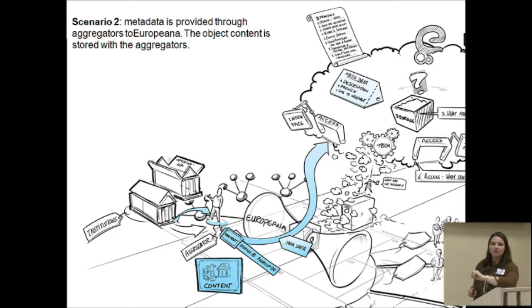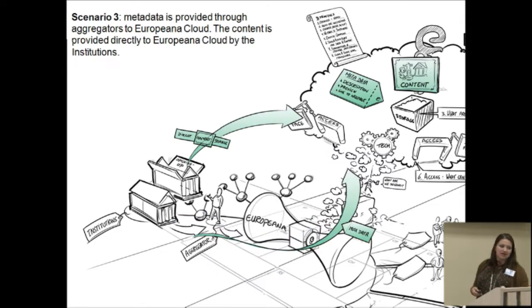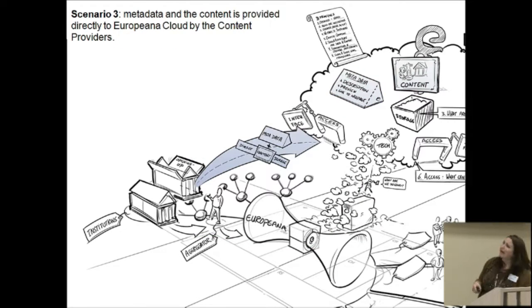And then a slight change on that is that metadata is provided via aggregators to the cloud, and that the content is provided directly to the cloud by the institutions. And then, ooh, there's a bad numbering on this, I'm afraid, metadata and content is put straight into the cloud, and the idea would be that Europeana would just be a user of that. There's four massive scenarios that we need to consider as kind of a burning question.